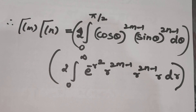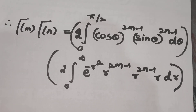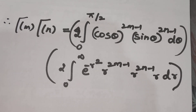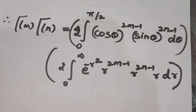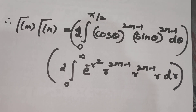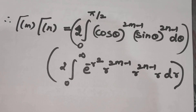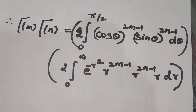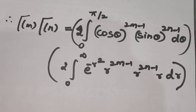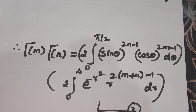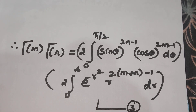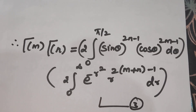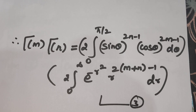We get gamma of m into gamma of n equal to 2 times integral from 0 to pi by 2 of cos theta power 2m minus 1 sin theta power 2n minus 1 d theta, into 2 times integral from 0 to infinity of e power minus r square, r power 2(m+n) minus 1, dr. We can separate the integrals since theta and r have independent limits.